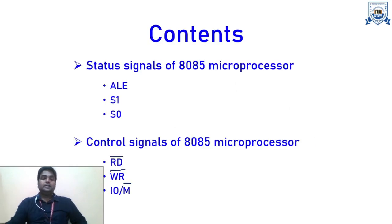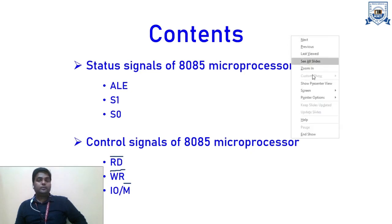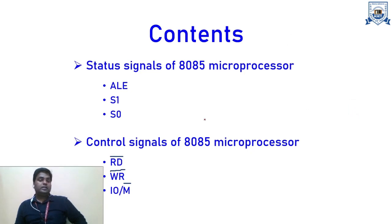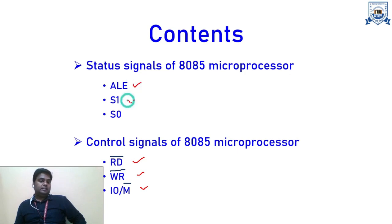These are the contents for today's lecture. First of all, we will discuss the status signals of 8085 microprocessor, and then we will focus on the control signals of 8085 microprocessor — that is read, write, and input-output M complement. The status signals are Address Latch Enable (ALE), S1, and S0.